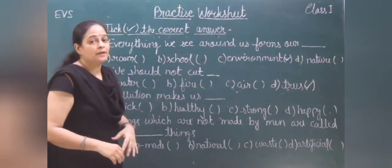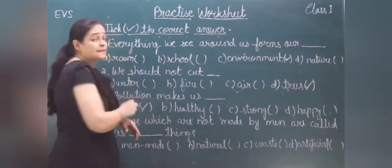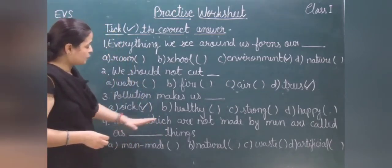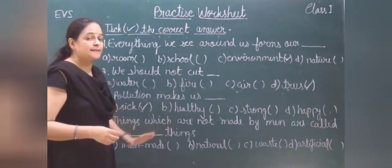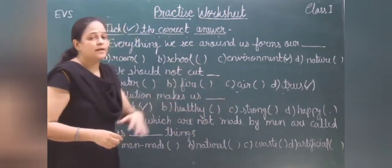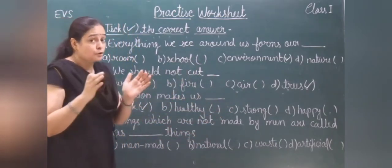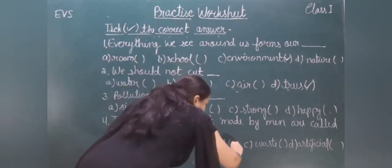Next is things which are not made by men are called as dash things. Options are man-made, natural, waste, or artificial. So things which are not made by men are called as natural things.